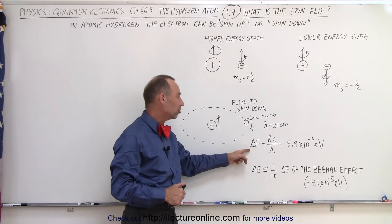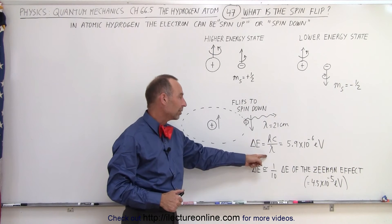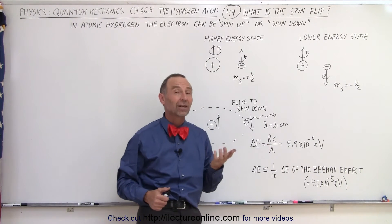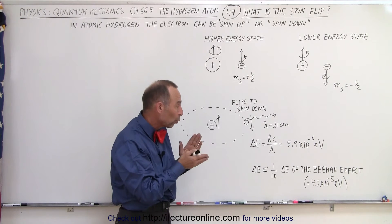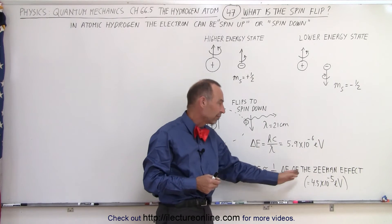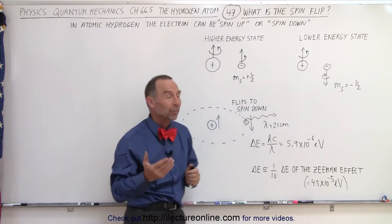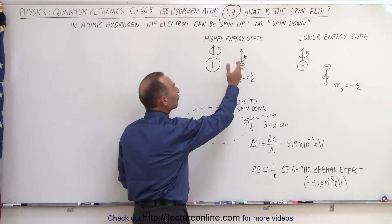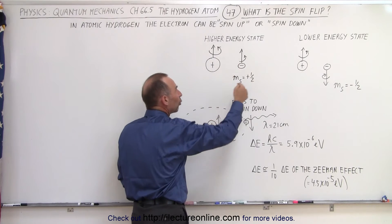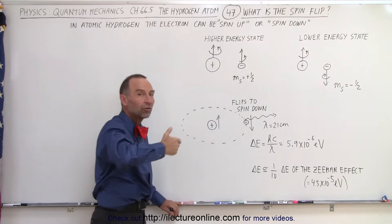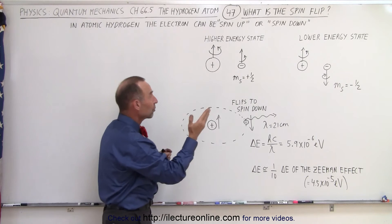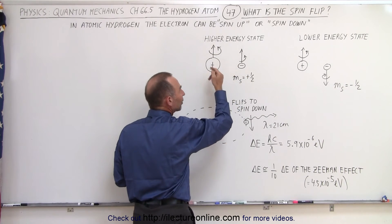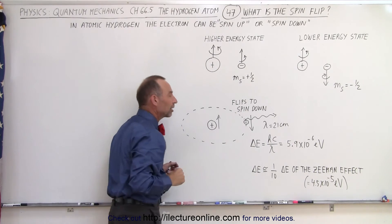So when we calculate the energy again using Hc over lambda, we then get an energy of 5.9 times 10 to the minus 6 electron volts, which is about 1 tenth the energy difference for the Zeeman effect. Now remember the Zeeman effect was caused by the interaction between the spin of the electron and the orbital motion of the electron causing magnetic field to exist. So it's basically the interaction between the spin and the magnetic field caused by the orbital motion of the electron.